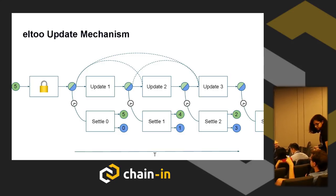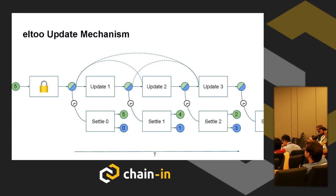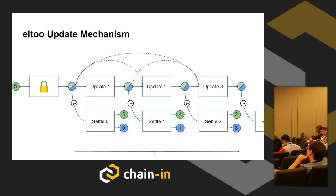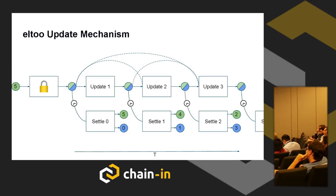Q&A: Is it possible for two parties to create a fork of the states — like two different 'update three' transactions with different values? Not really, because you need both signatures on updates. We need to agree on what we want to invalidate and how. Ideally, we construct the settlement transaction representing the desired end state, sign it together, and only then create the update transaction. In a fork scenario, you wouldn't have the other party's signature.